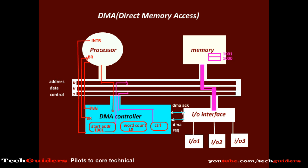The address register is incremented and the word count register is decremented for each word transferred. Finally, when the entire block is transferred the word count reaches 0, and the DMA transfer is completed. The DMA controller informs the processor using an interrupt signal and by keeping the bus request signal or hold signal low. Seeing the low bus request signal and word count of 0, the processor recognizes the transfer is complete and takes bus control back from the DMA controller by keeping the bus grant signal low.